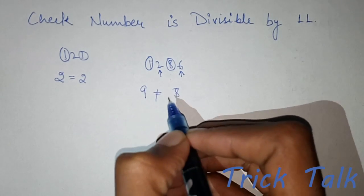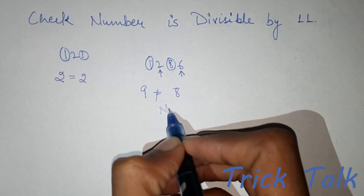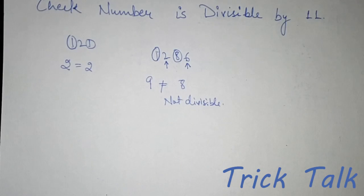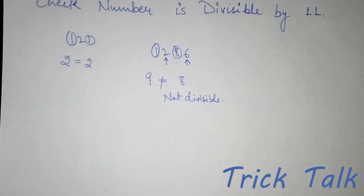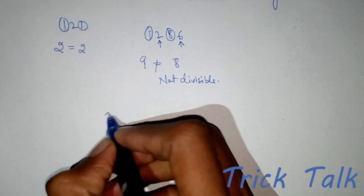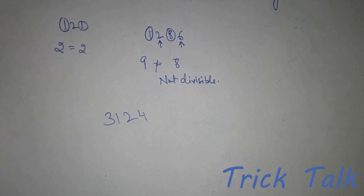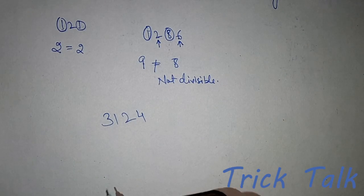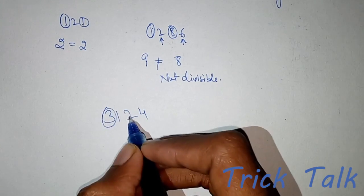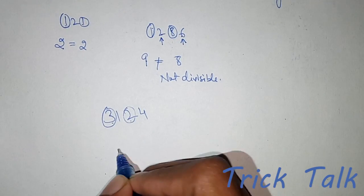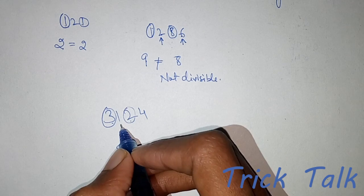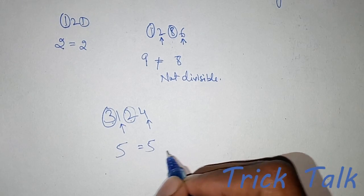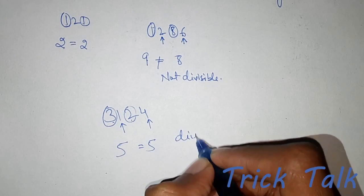So 1286 is not divisible by 11. Now let's take another example: 3124. We check whether it is divisible by 11 or not. Add the alternate digits: 3 plus 2 is 5, and 1 plus 4 is also 5. Both digits are equal, so this number is divisible by 11.